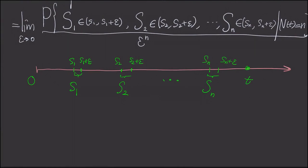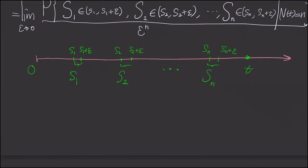To compute this, we have to use the memoryless property of the Poisson process — or rather, the stationary increment and independent increment properties. For example, if the first event happens in this interval, it simply means nothing happened before it. Similarly, we observe no event between successive arrival intervals, and lastly, no event after sn+ε up to t.